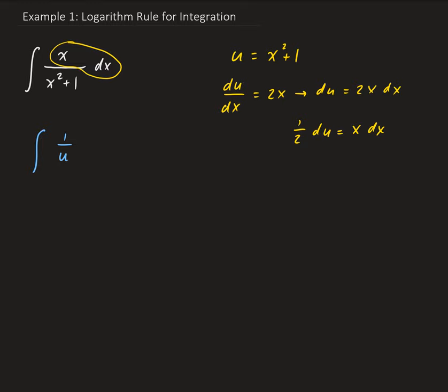So x times dx is going to get replaced by 1 half du. So we have 1 half times the integral of 1 over u du.